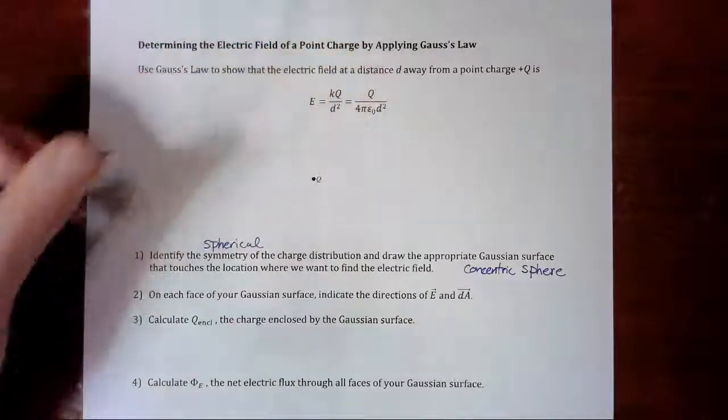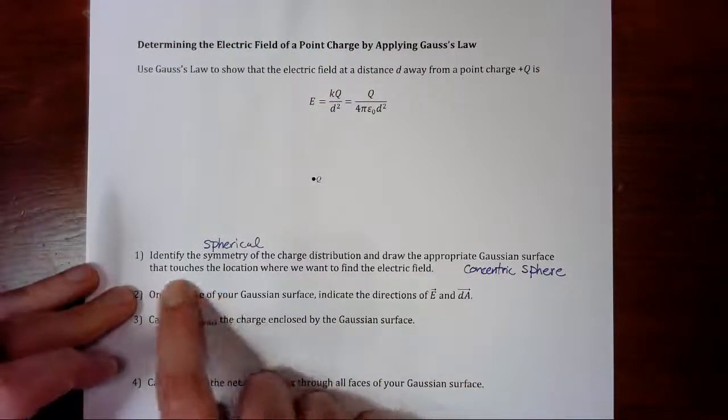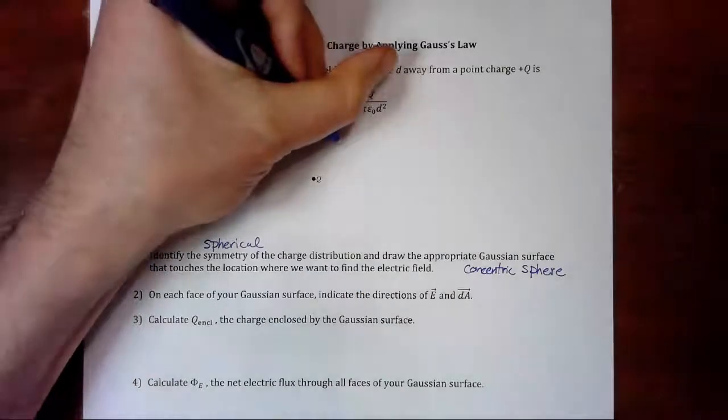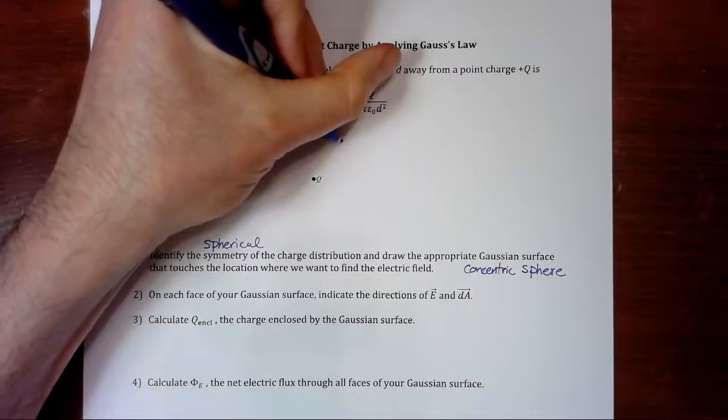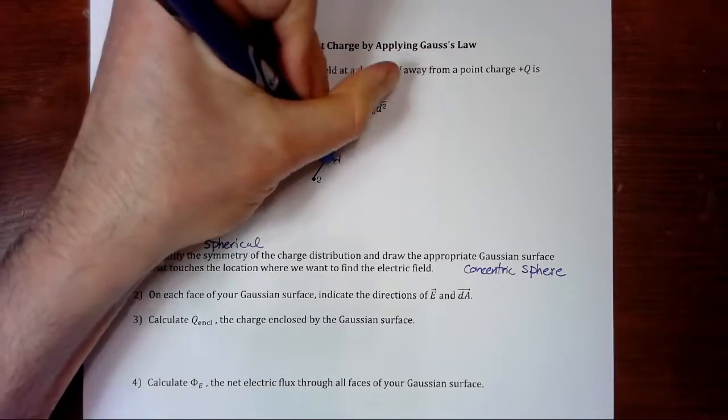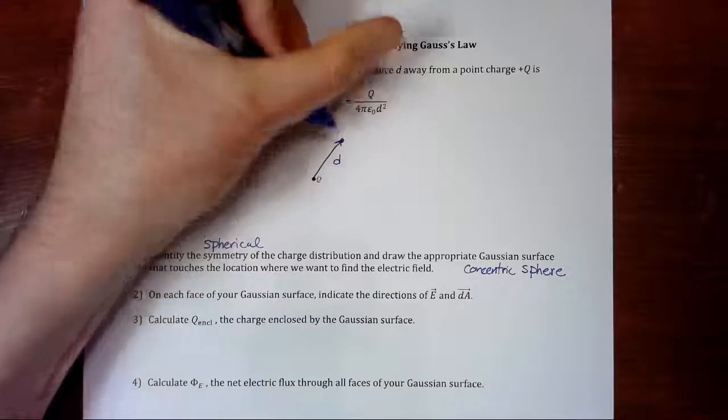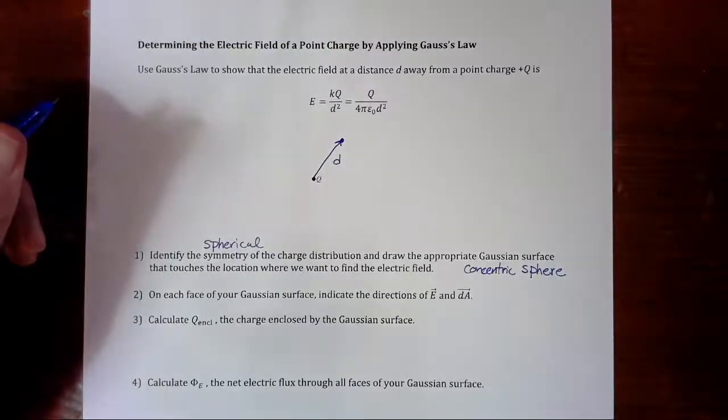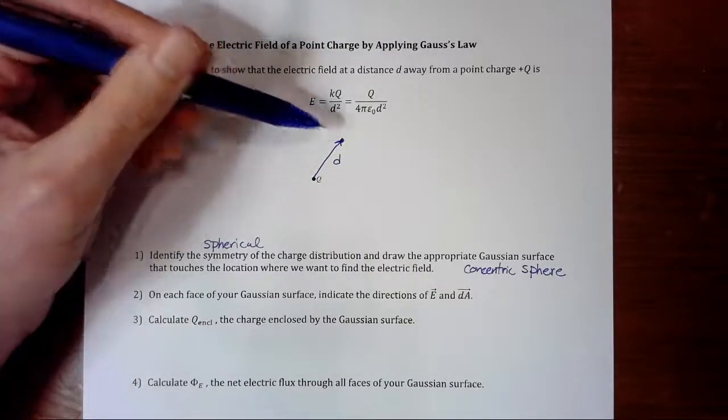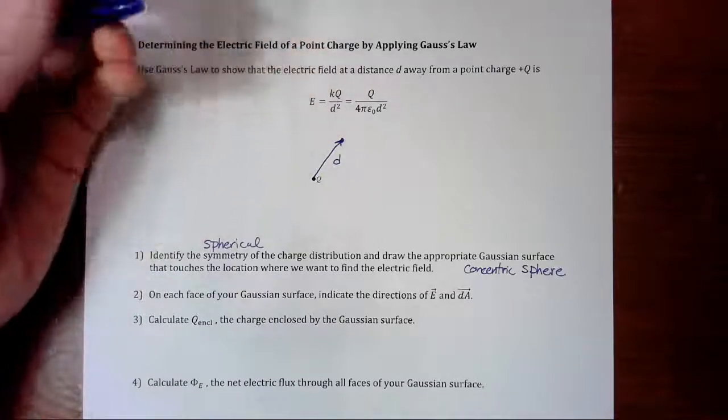And we want to make sure that the Gaussian surface touches the location where we want to find the electric field. So it says we're going to find the electric field at distance d away. So there's my distance d. So my Gaussian sphere needs to be concentric with this, and it needs to touch at distance d, so it's going to have a radius of d.